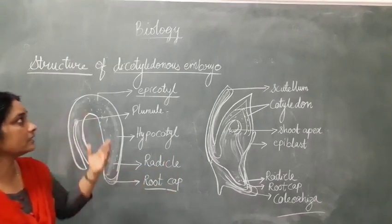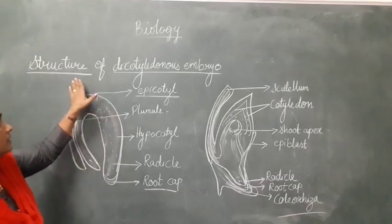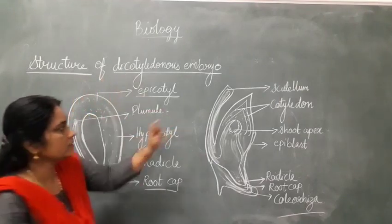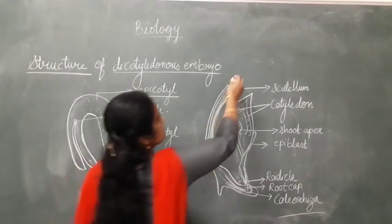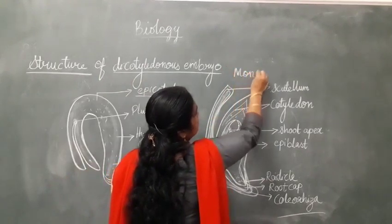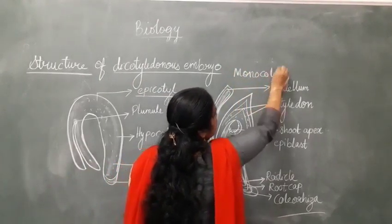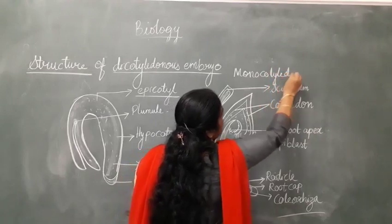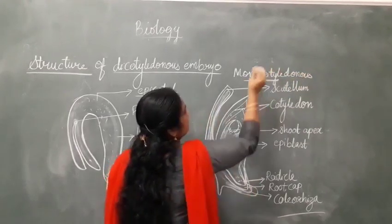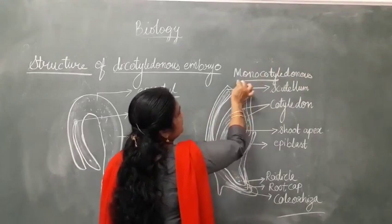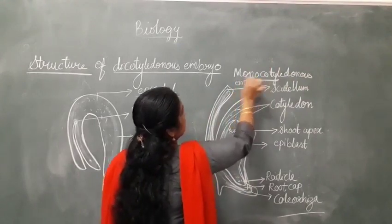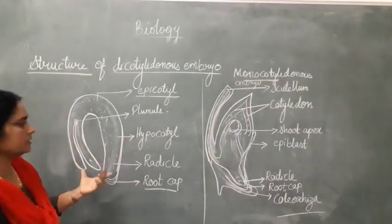Now let's study in a little more detail the structure of the dicotyledonous embryo and the monocotyledonous embryo, and compare these two structures.